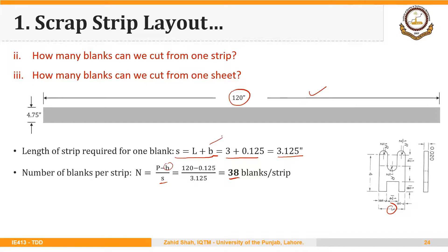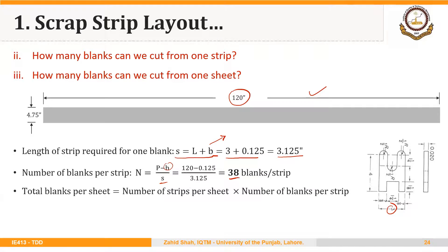B is the distance between the blanks. Total blanks per sheet — from the starting sheet of size 0.020 × 48 × 120 inches — equals the number of strips per sheet times the number of blanks per strip. We were able to cut 10 strips and 38 blanks per strip, so we will be able to cut 380 blanks out of this sheet.